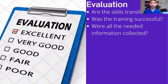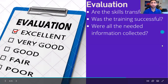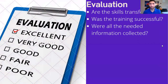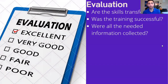Now, let's talk about evaluation and evaluation forms. These are essential for many reasons, as they help us determine if the skills have been transferred, if the training is successful, and if all the necessary information was collected. The evaluation forms within the school were not the best, as they were very subjective and did not offer an objective standard on whether the participants had learned something. However, they did help reveal that participants were not as engaged, which at least acts as an indicator.